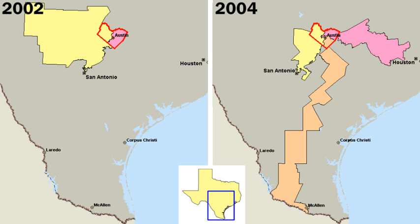The judicial branch, or judiciary, composed of the Supreme Court and lower federal courts, exercises judicial power. The judiciary's function is to interpret the United States Constitution and federal laws and regulations. This includes resolving disputes between the executive and legislative branches.